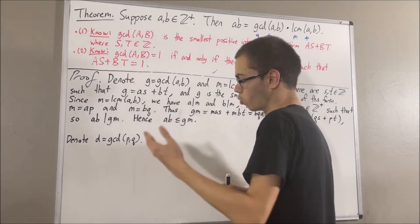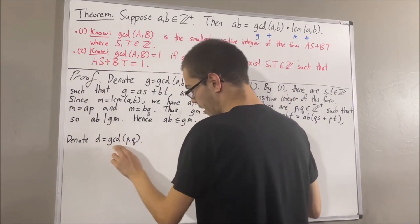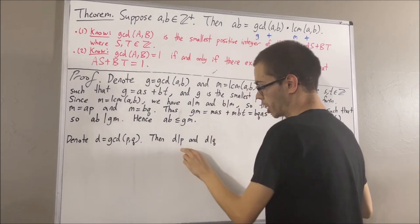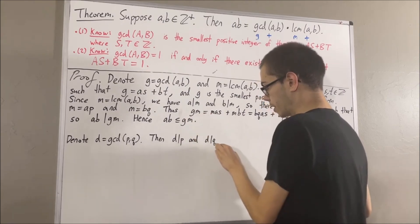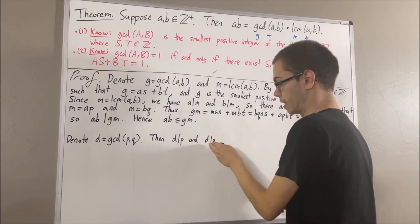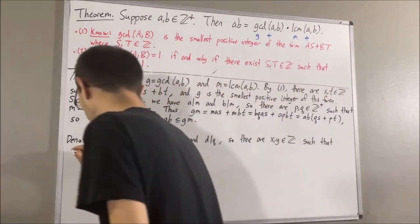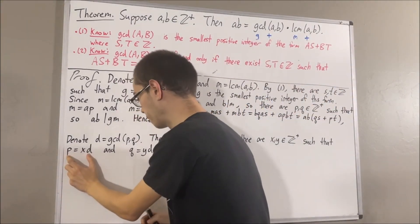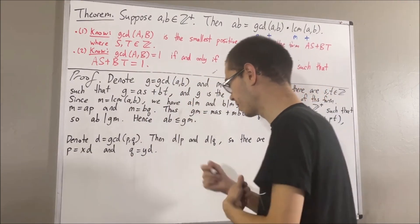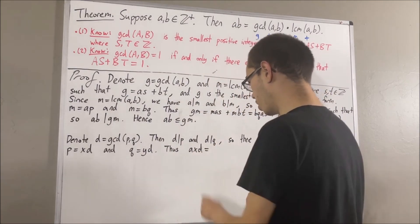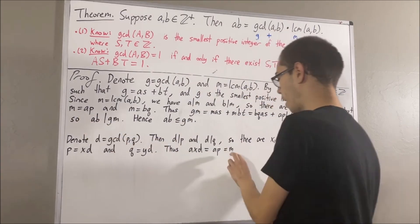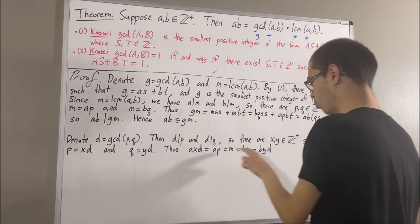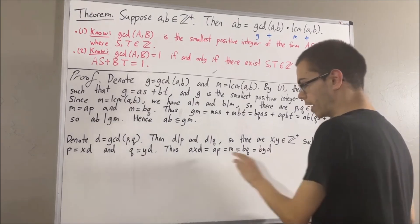Since D is a divisor of P, there is some integer X such that P is equal to X times D. Since D divides Q, there is some integer Y such that Q is equal to Y times D. X and Y must be positive because P and D are positive, and Q and D are positive. Now notice: computing AXD, we know XD equals P, AP equals M, M equals BQ, and Q equals YD. So AXD equals BYD, and dividing D from both sides gives AX equals BY.